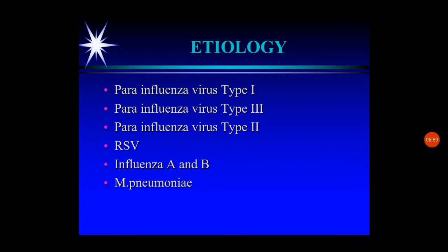Regarding etiology, acute laryngotracheobronchitis is primarily a viral infection. The most common causative agent is Parainfluenza virus type 1, followed by Parainfluenza virus type 3, Parainfluenza virus type 2, RSV (Respiratory Syncytial Virus), Influenza A and B, and Mycoplasma pneumoniae. So it is mainly caused by viruses, with Parainfluenza virus type 1 being the most common etiological factor.